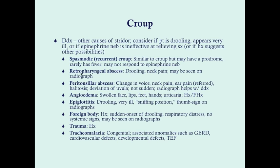Retropharyngeal abscess would show up as drooling and neck pain, and can be seen on radiograph. Peritonsillar abscess gives a change in voice, neck pain, ear pain referred from the abscess, and halitosis — since the abscess is near the tonsils. It also causes deviation of the uvula. Unlike croup, peritonsillar abscess is not sudden in onset, and the radiograph will help differentiate by showing the abscess.